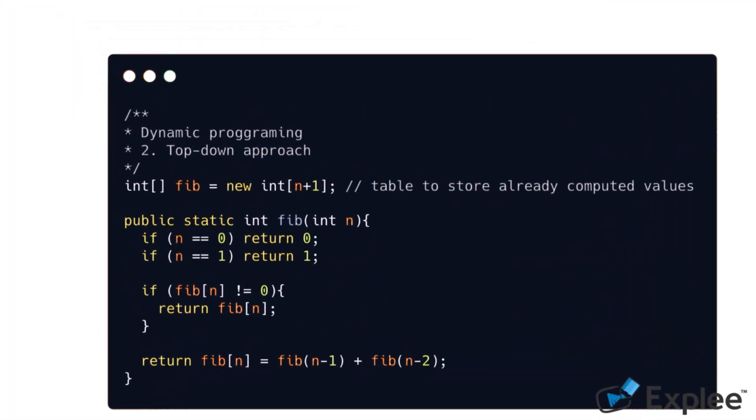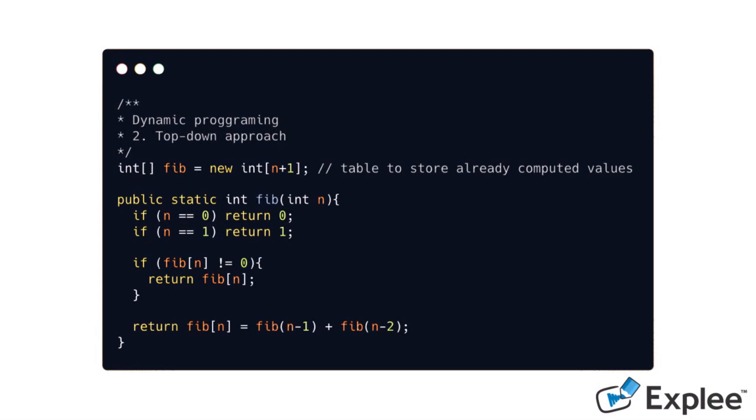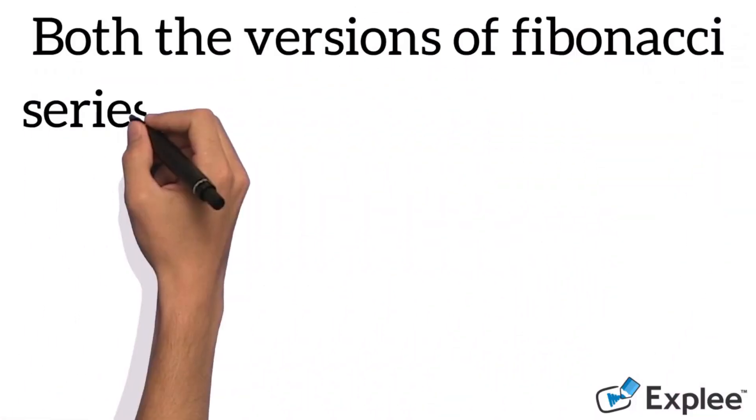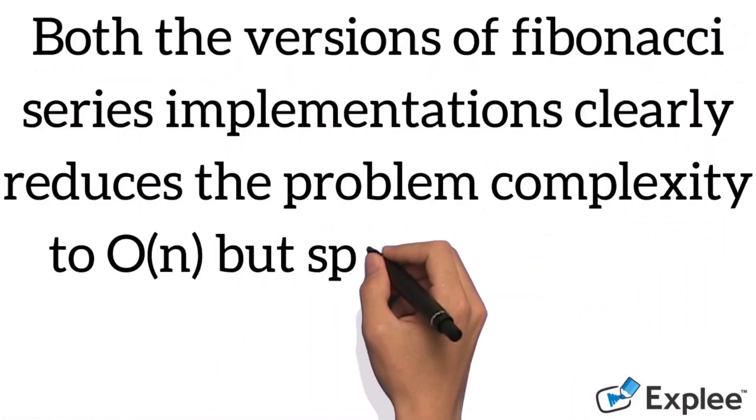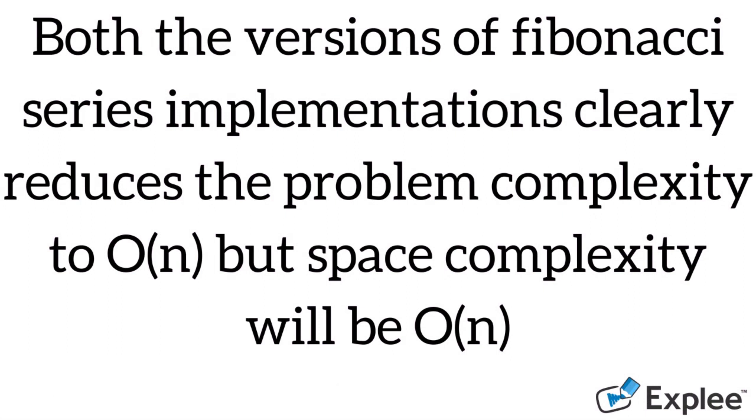In top-down approach, we preserve the recursive calls and use the values if they are already computed. The implementation is as follows. Problem complexity reduces to big O of n because if a value is already computed then we are not calling the sub-problems again.